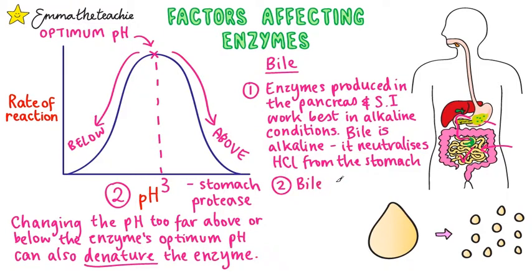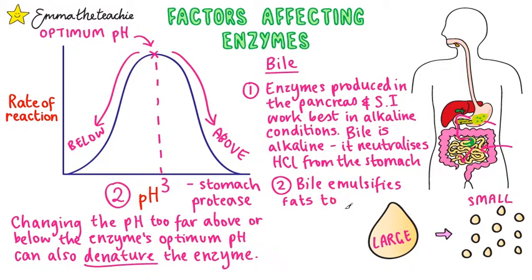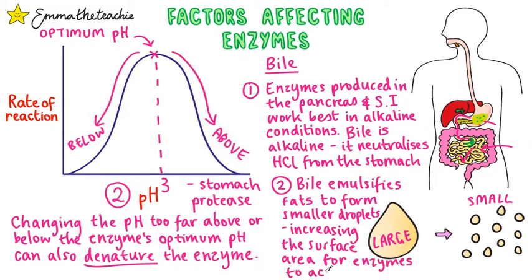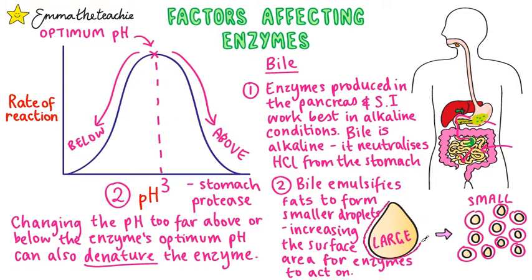Bile has another function — it helps with the digestion of fats by emulsifying them. This means they are physically broken down from larger droplets into smaller droplets, providing a much larger surface area for enzymes to act upon, which increases the rate of digestion. It's important to note that bile is not an enzyme, as it isn't chemically breaking down the fat molecule into different molecules — it's just physically making it into smaller pieces.